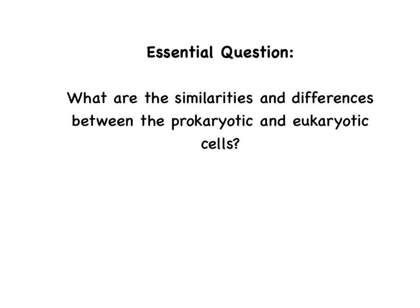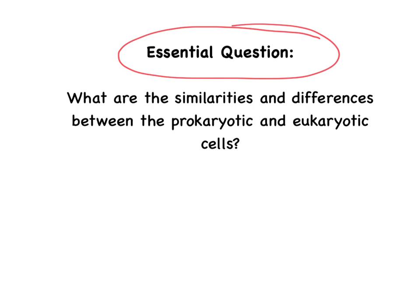That's the end of this video. You've reached the essential question again. Make sure you can answer it — if you can't, go back and re-watch this video or review your Cornell notes. You need to be able to talk about the similarities of all cells and the differences between them. Make sure you complete your summary on your Cornell notes — you can basically just answer the essential question, and that would be a great summary.